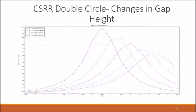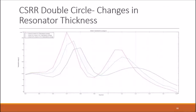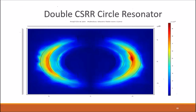For the double circle complementary split ring resonator, we can see that as the gap height increases, the total electrical energy output decreases, the total energy output decreases, and the resonant frequency increases. The double circle complementary split ring resonator shows similar results for changes in resonator thickness. Here we can see the model in simulation where the red indicates high magnetic flux density.